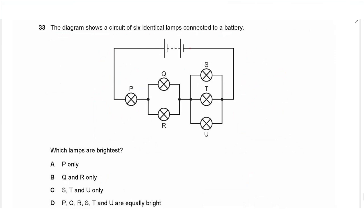Question 33: six identical lamps are connected to a battery in a circuit. Lamp P is in series alone; lamps Q and R are in parallel; lamps S, T, and U are in parallel. Resistance of P is R; Q and R combined is R/2; S, T, U combined is R/3. P has the greatest resistance and therefore the greatest voltage across it, making it the brightest lamp. The answer is A.